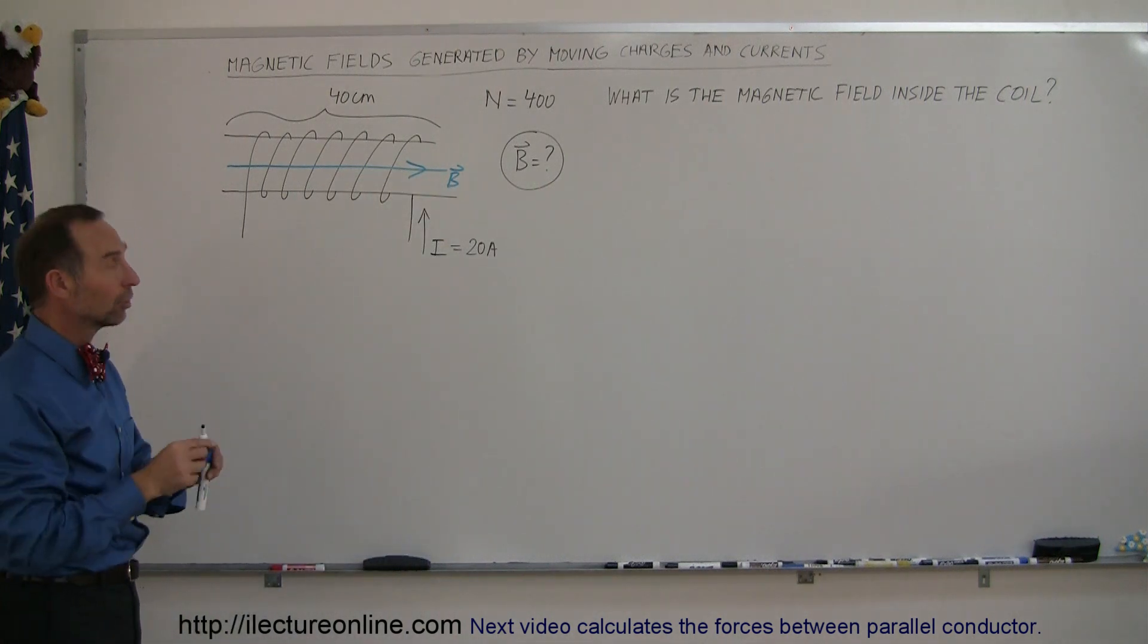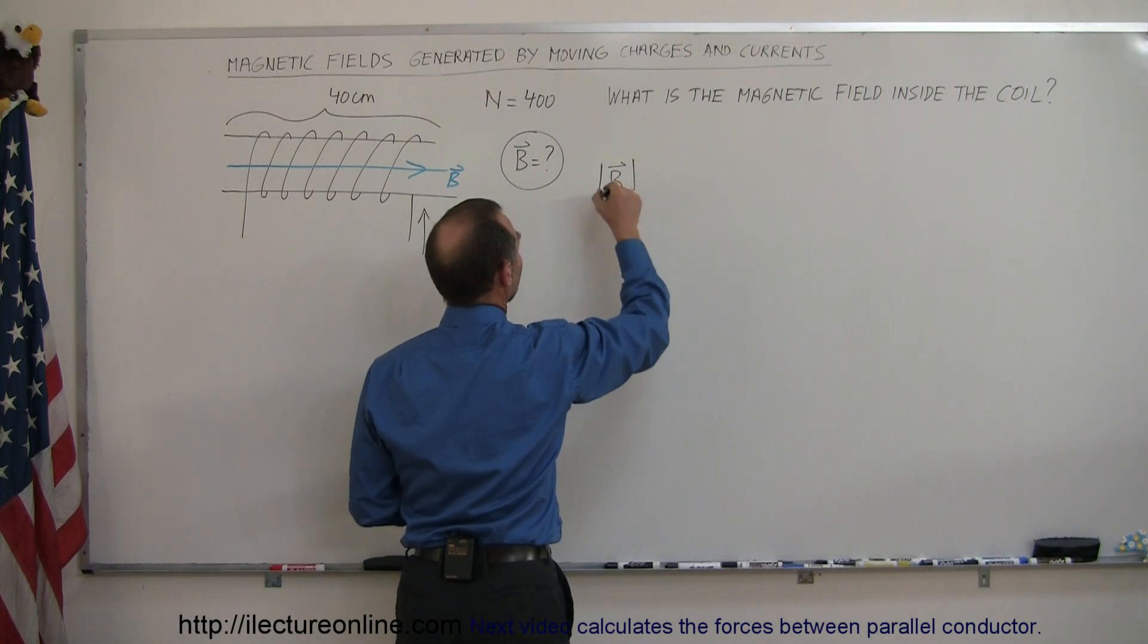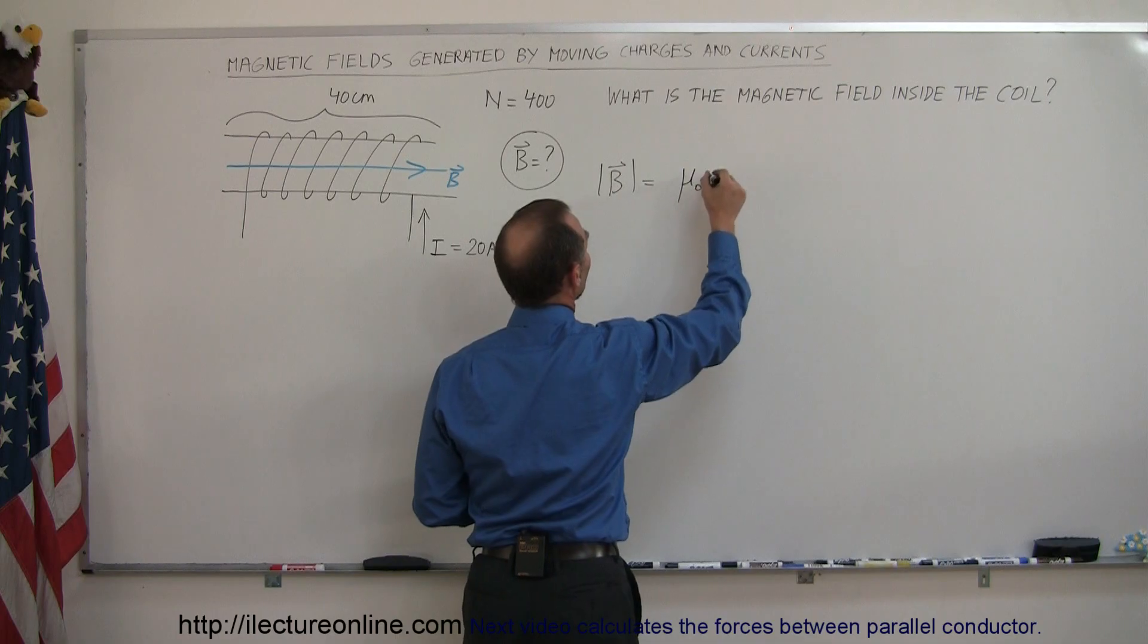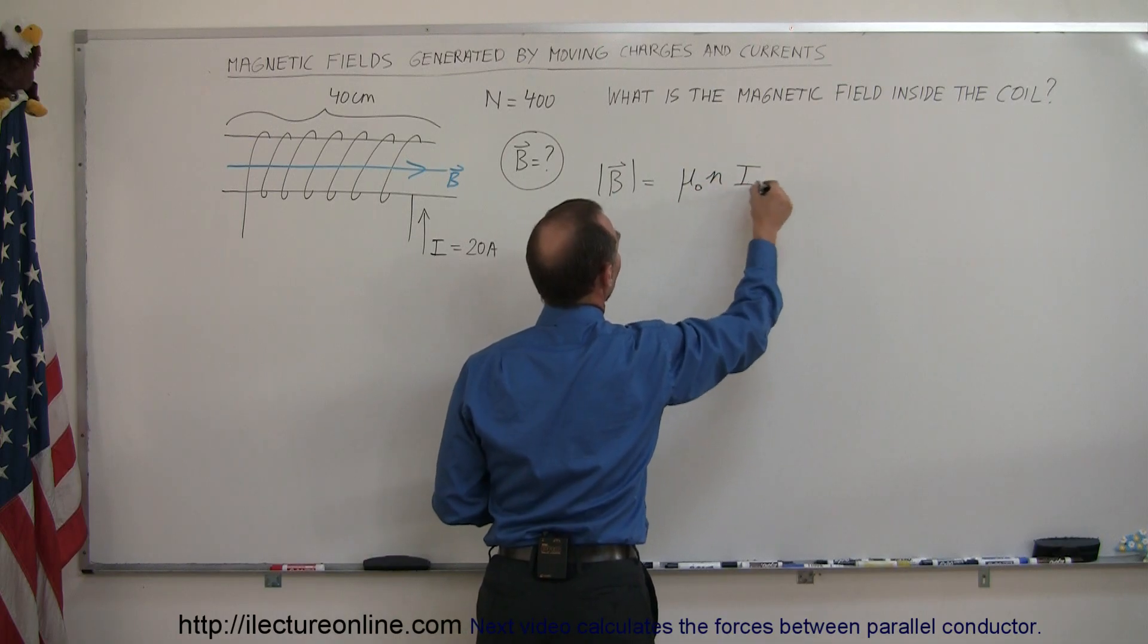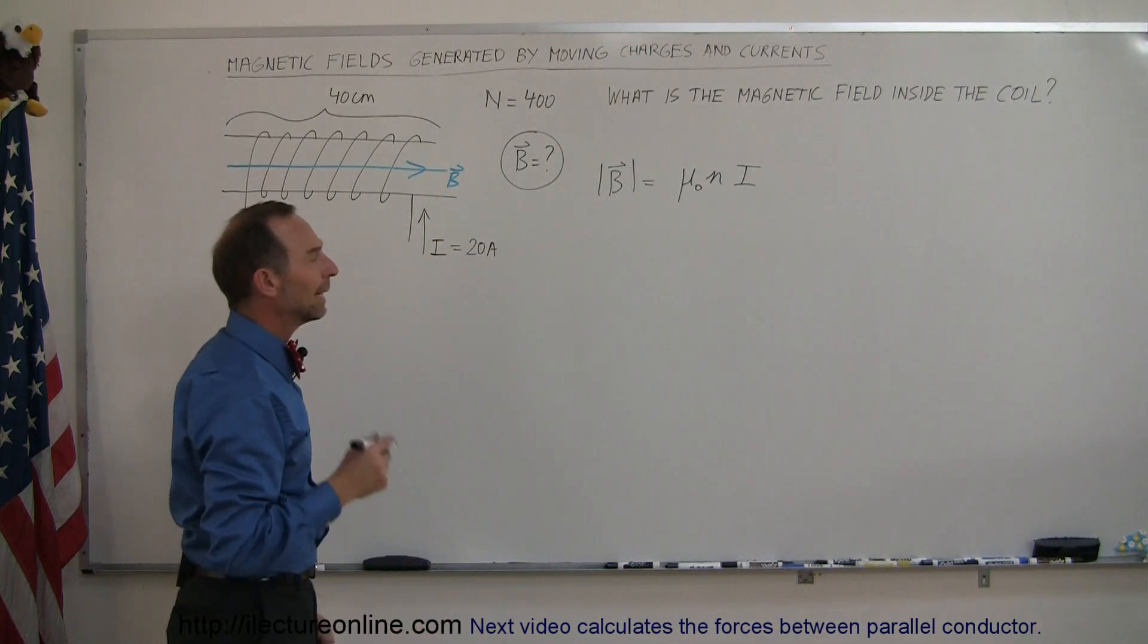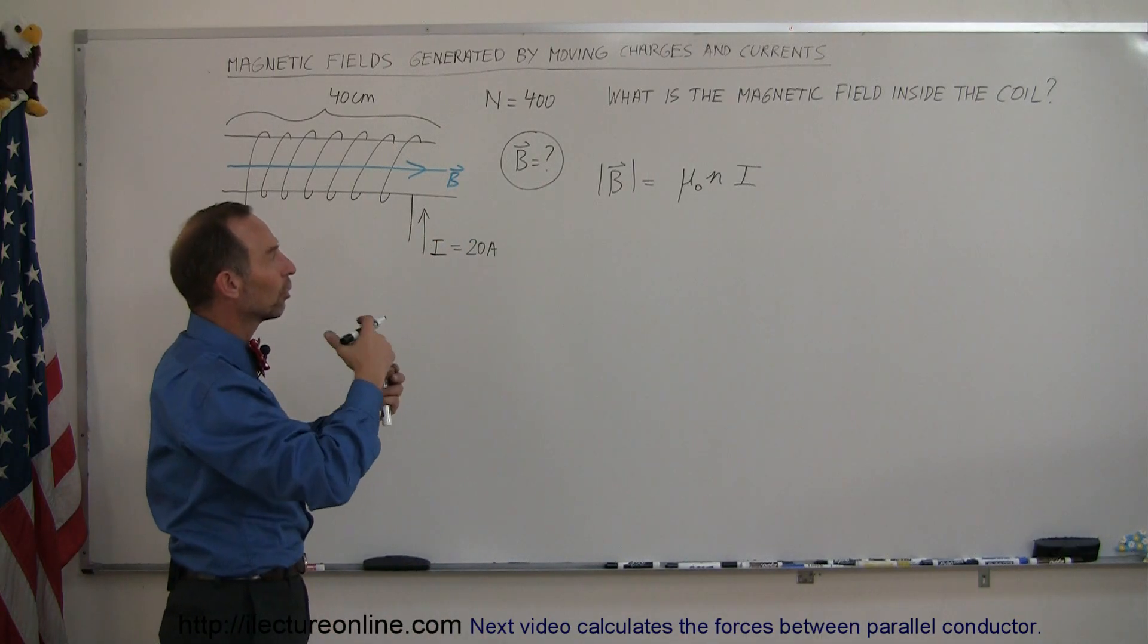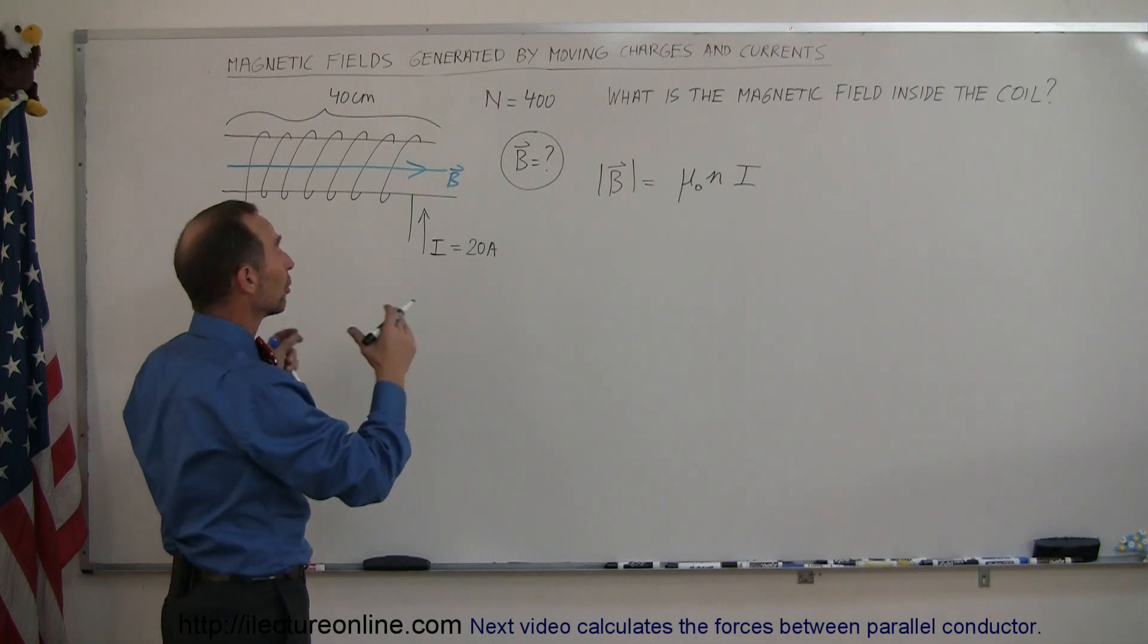Now to find the magnitude of the coil, that can be found by taking μ₀, multiplying it times n and times I. I being the current, μ₀ of course you already know that, and n is representative of the number of loops, or the number of turns as we call it, per unit length.